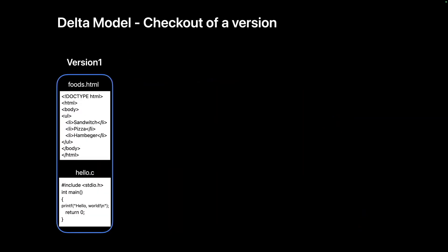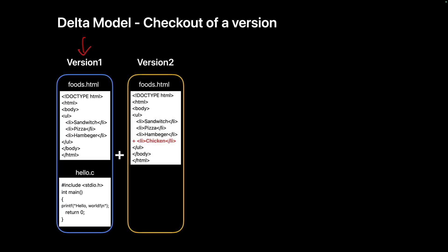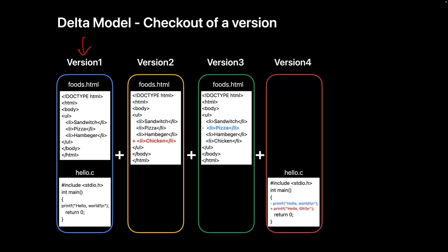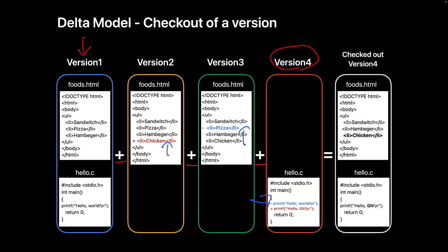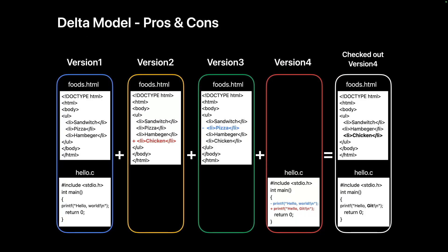How does checkout work to recreate a specific state? It starts from the initial version and sequentially adds all versions up to the desired version. When checking out version 4, it starts with the content of version 1, adds the changes from versions 2, 3, and finally version 4. The delta model is efficient in terms of storage usage. However, there is a noticeable performance drawback — if there are 1,000 versions, you would need to apply all changes sequentially.